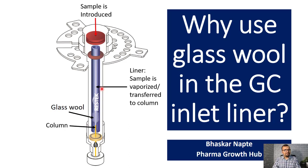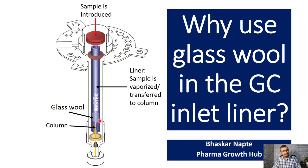So what happens once the sample gets introduced into the injector port? The sample undergoes vaporization and then it gets transferred to the column. But before it gets transferred to the column it has to travel through the glass wool. You can see the presence of glass wool at the bottom of this inlet liner.